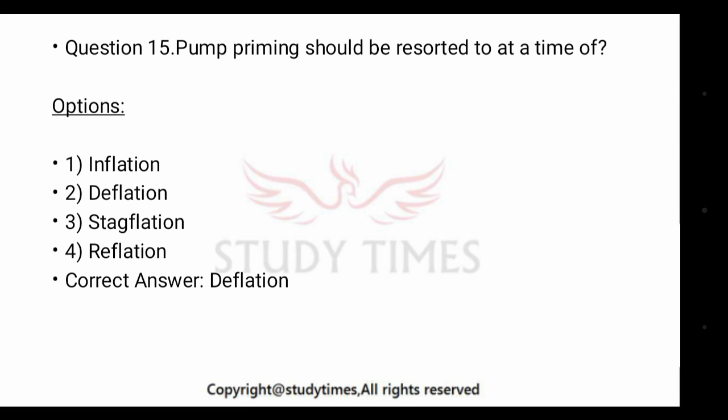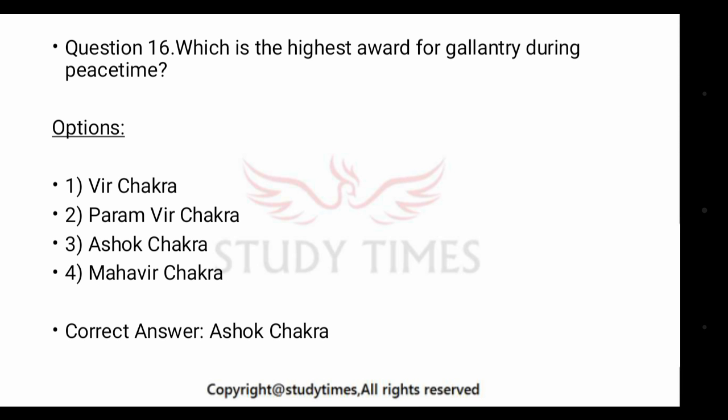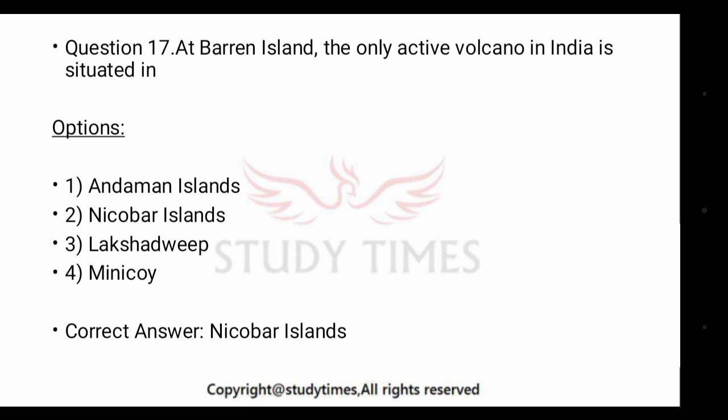Which is the highest award for gallantry during peacetime? The answer is Ashok Chakra. Next question: Barren Island, the active volcano in India, is situated in dash — the answer is the Andaman and Nicobar Islands. In the Andaman Islands there is also a UNESCO World Heritage Site which is the Cellular Jail — this may also come in an exam.